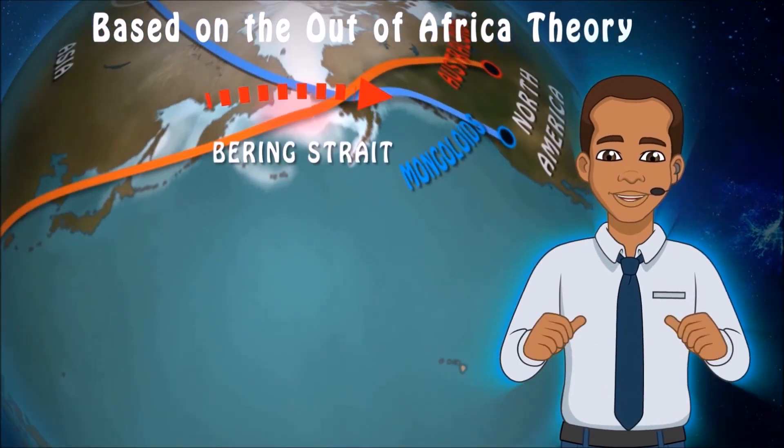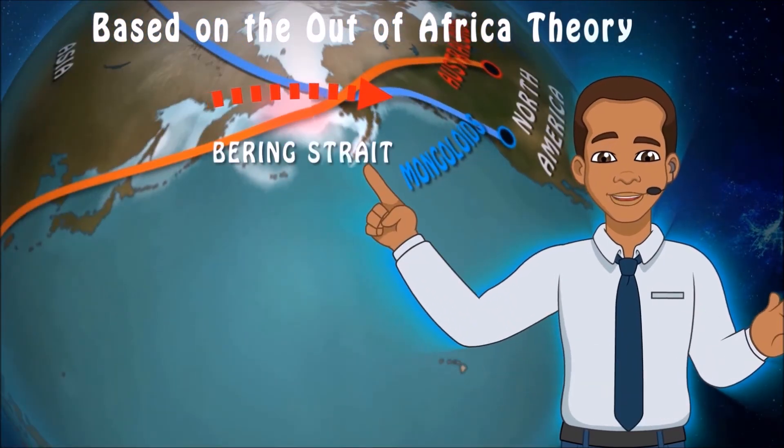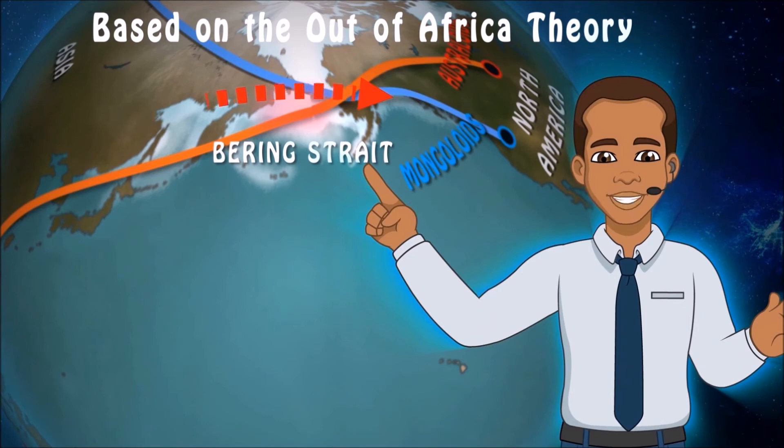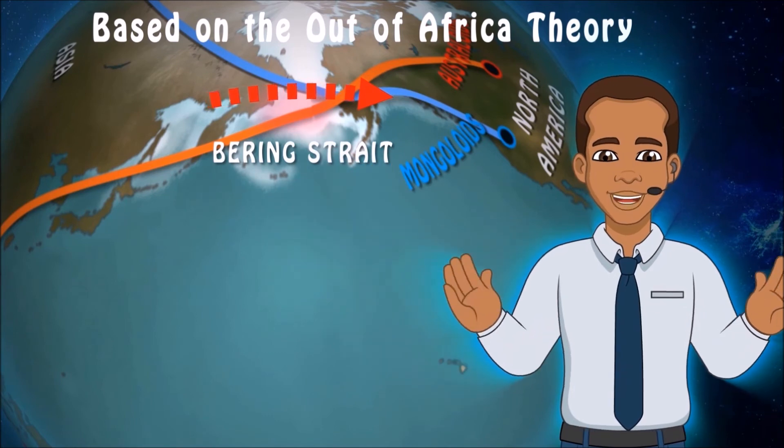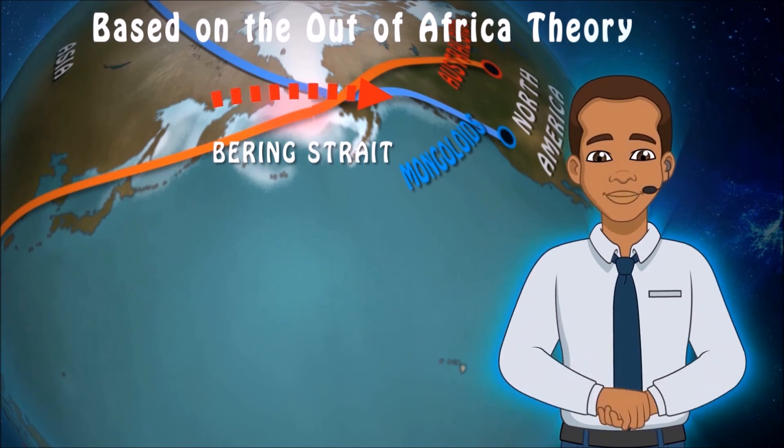These groups are thought to have entered the Americas by crossing the Bering Strait, a land bridge that at one point connected Asia and North America.